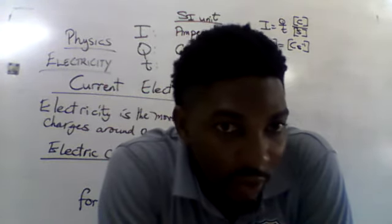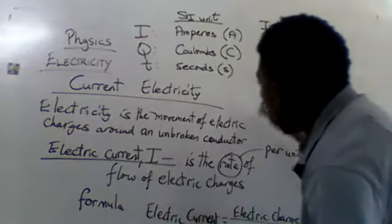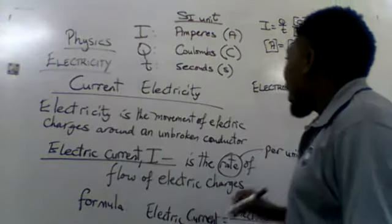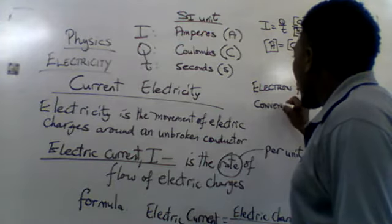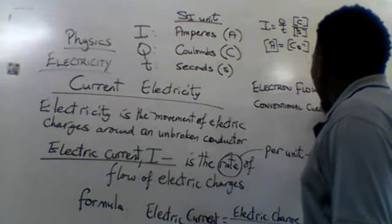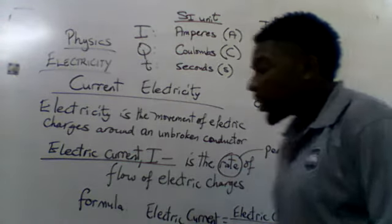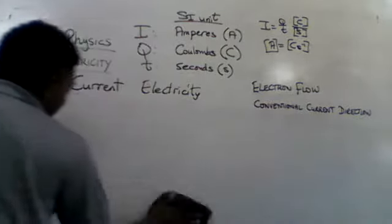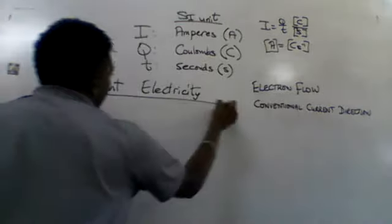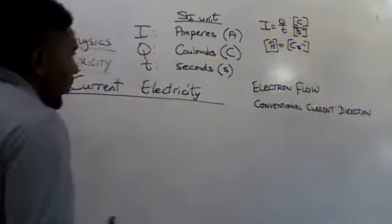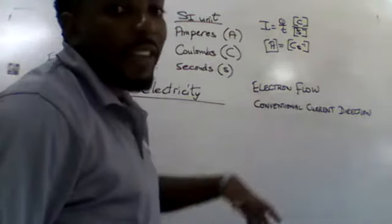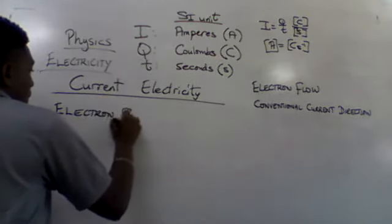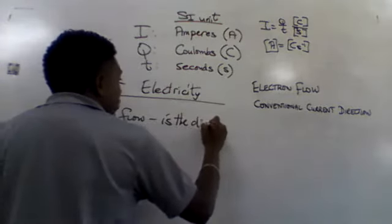In the syllabus, there are two different methods discussed. The first is electron flow, and the second is conventional current direction. Electron flow simply signifies the movement of electrons around a circuit — it is the direction in which electrons move around a conductor.